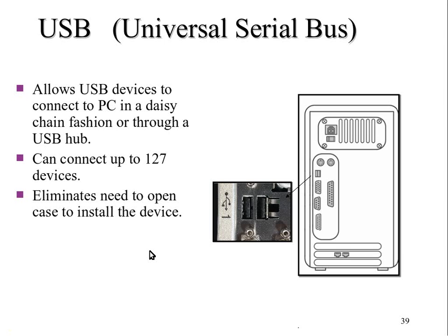USB devices can be daisy-chained — you can connect one from one to another. Your computer may have four or five USB connectors on it, which is pretty typical. But if you have more things than that, you can get a USB hub — a little box that allows you to connect more devices. You connect the hub to one of the USB ports on your computer, and then you can connect other devices to the hub.